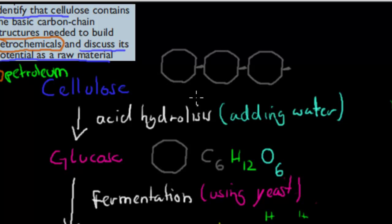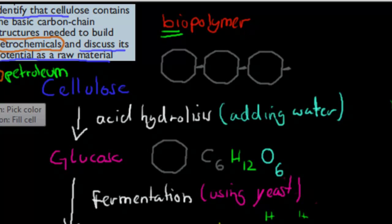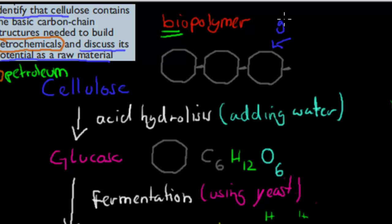If you remember, cellulose was a biopolymer — a polymer with more than one unit, and it was natural, it was biological. These biopolymers are made up of monomers, which are glucose monomers. Each individual part is a glucose monomer.